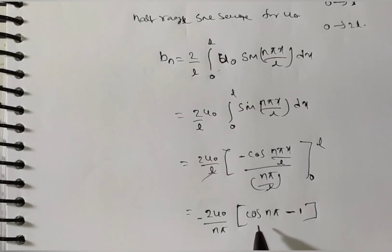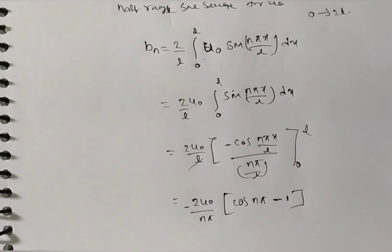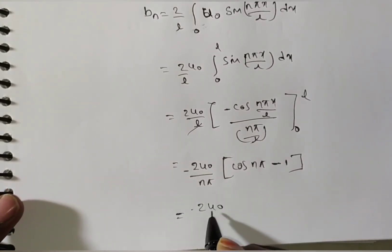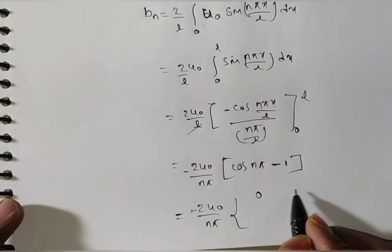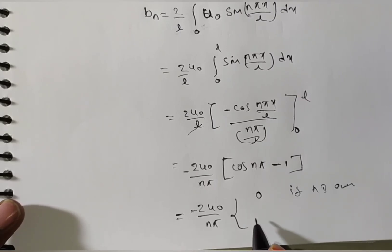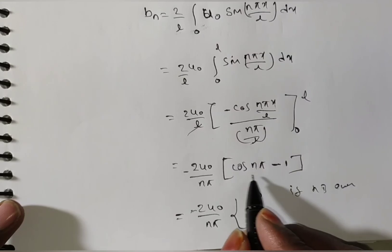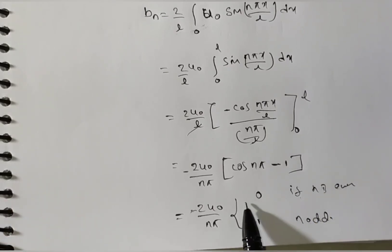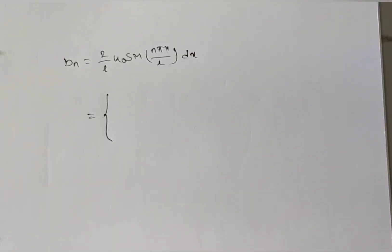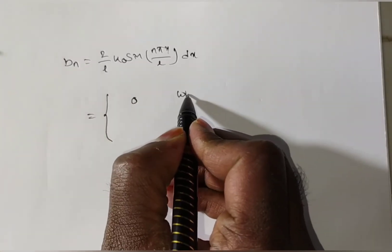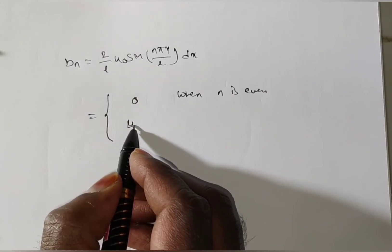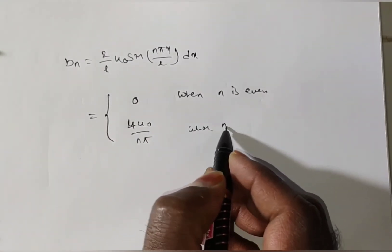Now cos(0)=1. For n even, cos(nπ)=+1, so Bₙ = (2U₀/nπ)·(−1+1) = 0. For n odd, cos(nπ)=−1, so Bₙ = (2U₀/nπ)·(−(−1)+1) = (2U₀/nπ)·2 = 4U₀/(nπ). Therefore Bₙ = 4U₀/(nπ) when n is odd, and 0 when n is even.